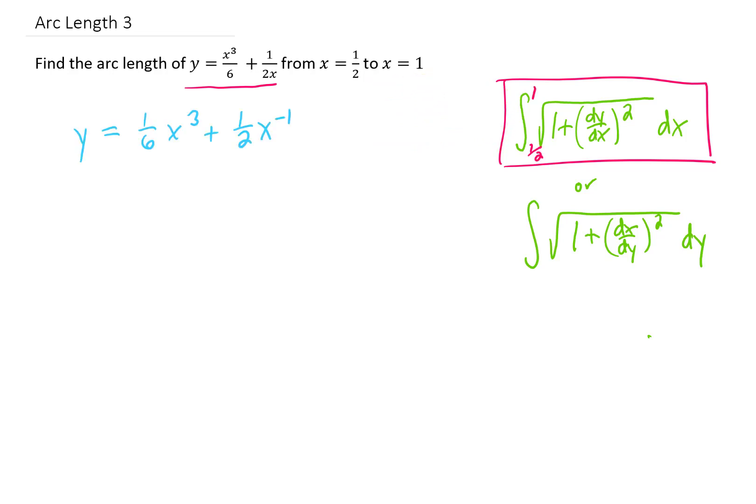Now we're going to need to take a derivative of this function with respect to x. So I'm going to rewrite it first. And now taking a derivative is going to give us 1/2 x squared minus 1/2 x to the negative 2 power.